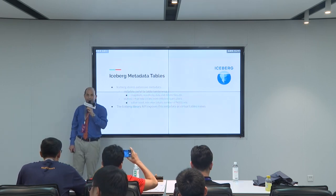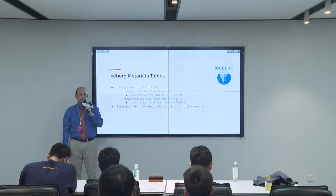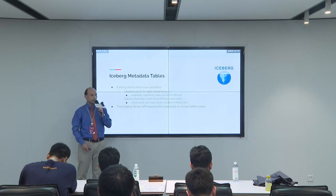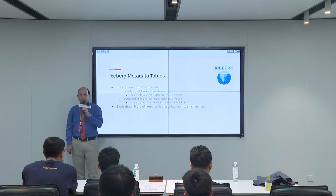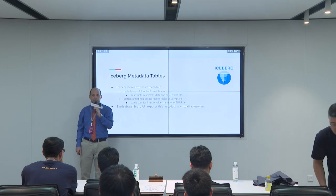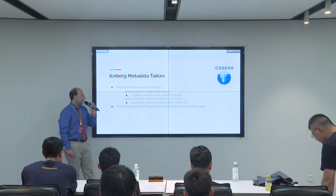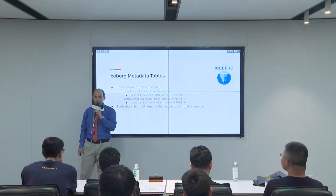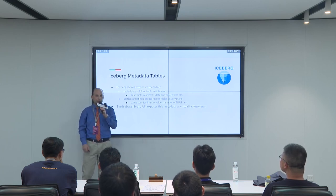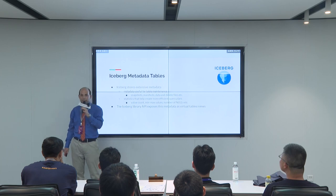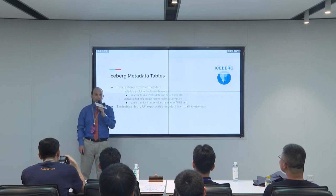What are Iceberg metadata tables? Iceberg stores lots of metadata for each Iceberg table. Some of this metadata is useful for table maintenance — like how many files you've got, or whether you have delete files — and some other metadata is useful for query engines to make more efficient query plans, like null values, value counts, min-max values, etc. The Iceberg library provides a way to use this metadata as if they were tables, and this is what we call metadata tables. In Apache Impala, we've made it possible to query these metadata tables almost completely as if they were regular tables.